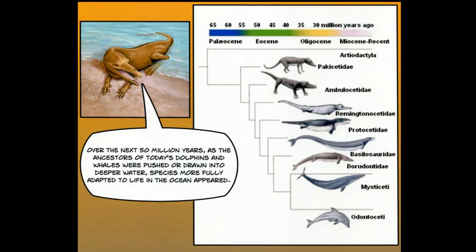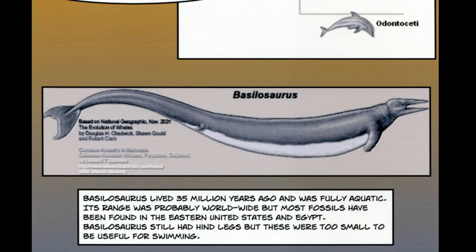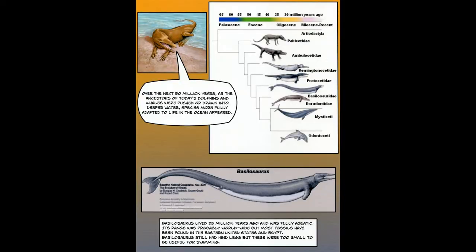Over the next 50 million years, as the ancestors of today's dolphins and whales were pushed or drawn into deeper water, species more fully adapted to life in the ocean. One of them is called the Basilosaurus. Basilosaurus lived 35 million years ago and it was fully aquatic. Its range was probably worldwide, but most fossils have been found in the eastern United States and Egypt. Basilosaurus still had hind legs, but these were too small to be useful for swimming. In the photo on the top right, you can clearly see the transformations happening over a long period of time.